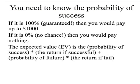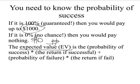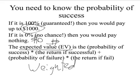If it's guaranteed, then of course it's worth $1,000. If it's guaranteed that it won't sell, it's worth $0. The expected dollar value is the probability of success times the return if successful, plus the probability of failure times the return if failed. This is called the weighted average of the outcomes, where the weights are the probabilities of success or failure.